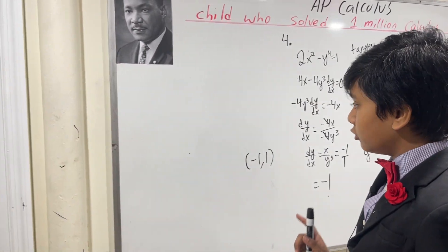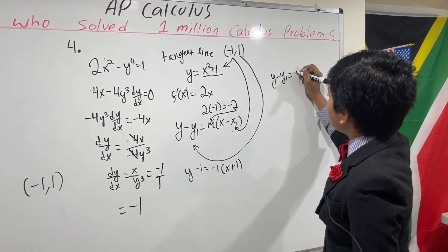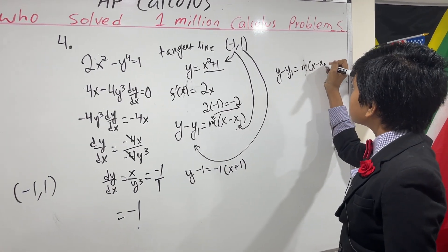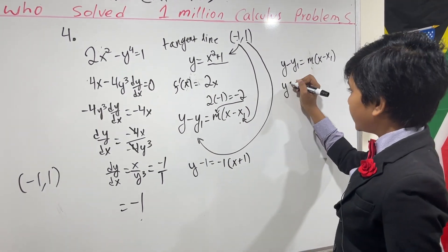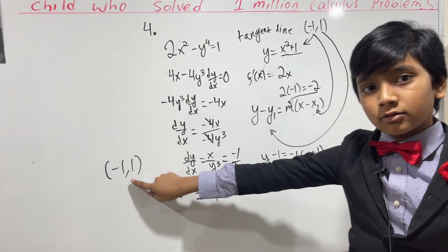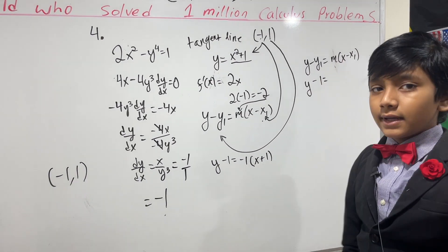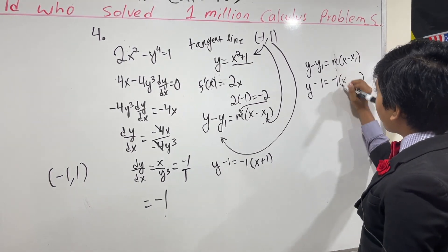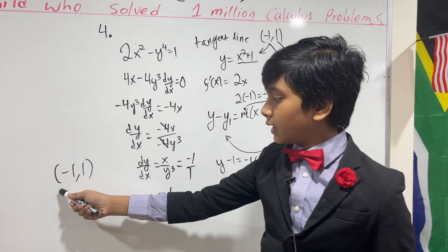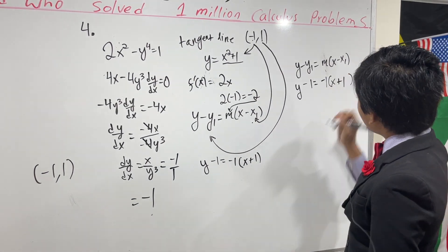And then, what we do, y minus y1 equals m times x minus x1. And so, now, we get y minus, what is y1? Well, it's 1. It's equal to m, which is minus 1, times x minus, x1 is negative 1, and minus negative 1 is positive 1.